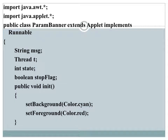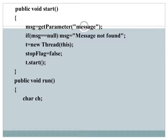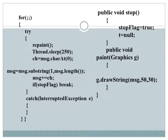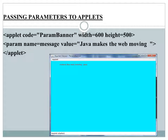Here is a simple example using the param tag — the same moving banner program, but instead of hardcoding the message, we pass it using the param tag. Inside the start method we use getParameter to retrieve the message passed from the HTML page. In the HTML file, we embed a param tag with name='message' and value='java makes the web moving'. To get this value inside the program, we call getParameter with the name 'message'.